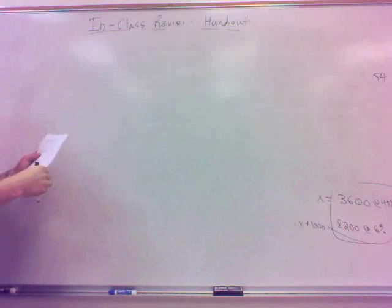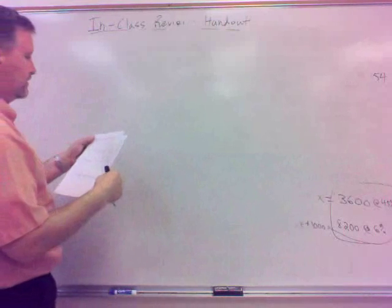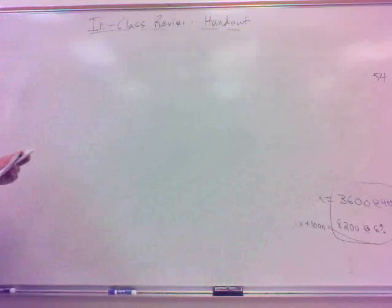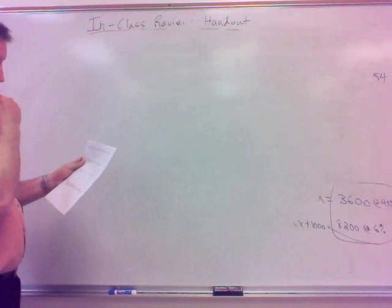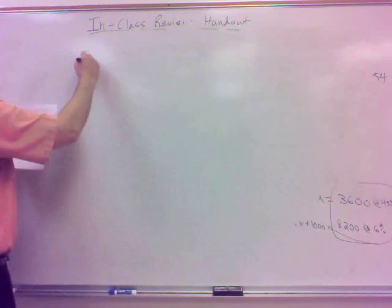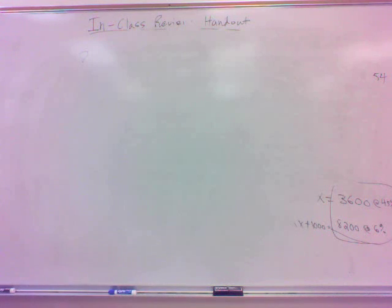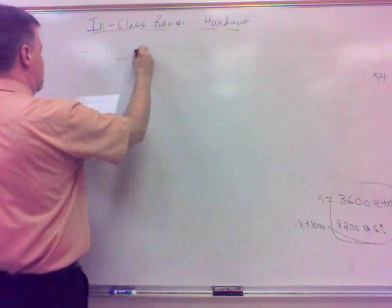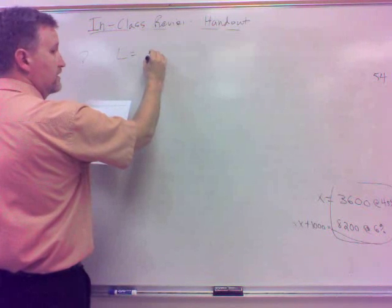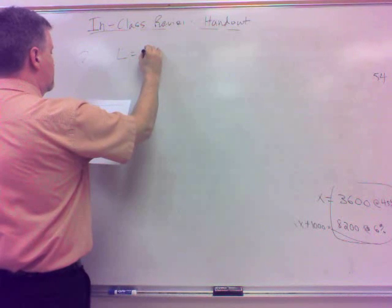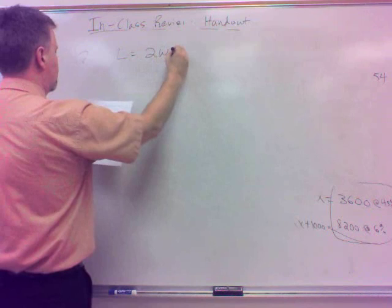Alright, number three. If the length of a rectangle is five feet longer than twice the width and the perimeter is 80, find the dimensions of the rectangle. Now this one, there's one like this on the review sheet there, so this will help you, hopefully on that, if you haven't already.